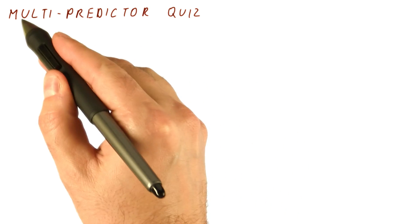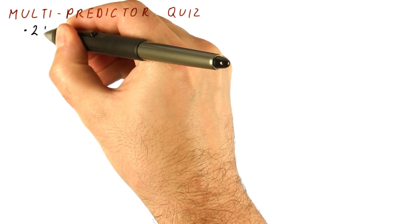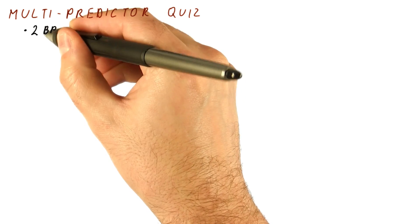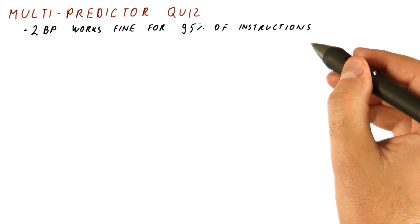Let's see if we know how to use multiple predictors and combine their decisions. Suppose we have a program in which a two-bit predictor works just fine for 95% of our instructions.